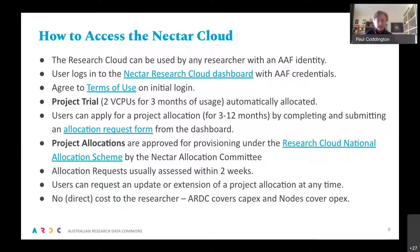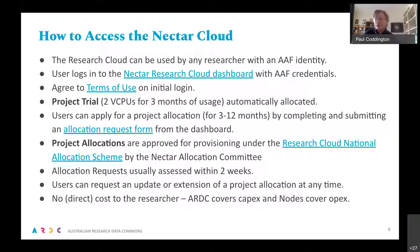Project allocations get reviewed by an allocation committee based on a set of criteria, and we aim to make decisions within a couple of weeks. Users can request updates — ask for more, ask for less, or ask for an extension at any time. There is no direct cost to the researcher; it's not free, but ARDC typically covers the capital expenditure for nationally prioritized allocations and the nodes cover the operational expenditure.